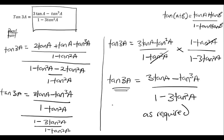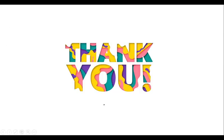So this is how we prove tan 3a to be equal to 3 tan a minus tan cube a, all divided by 1 minus 3 tan squared a. Thank you so much for watching, and I'll see you in the next video. Bye-bye.